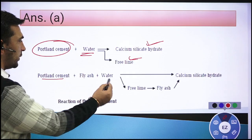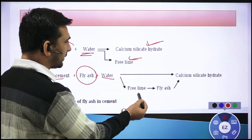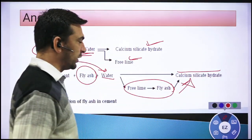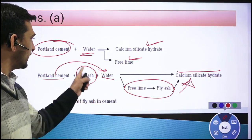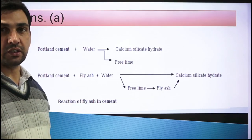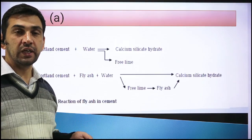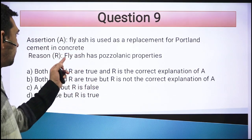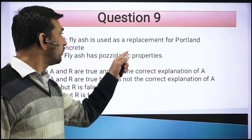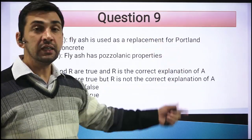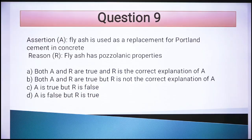By adding fly ash, you can reduce the amount of Portland cement needed — roughly 30% can be replaced. Fly ash is also lighter than Portland cement, so the overall weight of the concrete is reduced. So: the fly ash is used to replace Portland cement — correct. The reason is that fly ash has pozzolanic properties — correct. And the reason correctly explains the assertion. Therefore option A is correct: both A and R are true, and R is the correct explanation of A.